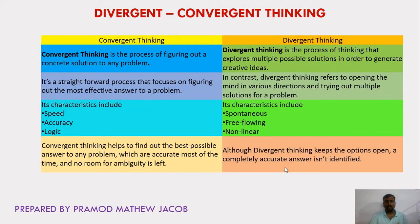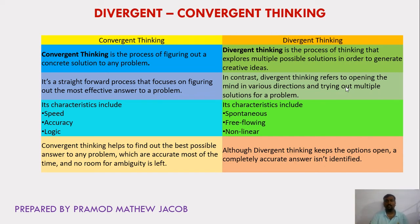Let's see the difference between convergent and divergent thinking. Convergent thinking is the process of figuring out a concrete, well-established, well-defined final solution to a particular problem. Whereas divergent thinking is the process of exploring various multiple possible solutions in order to generate creative ideas. Convergent thinking follows a straightforward process, while divergent thinking refers to opening the mind in various directions and trying out multiple solutions for a single problem.